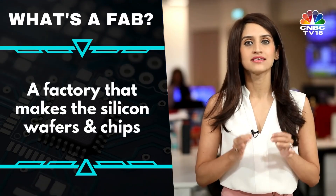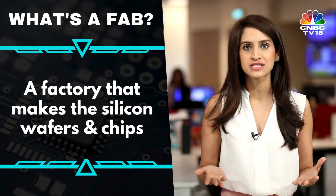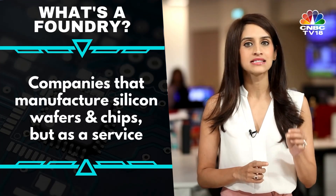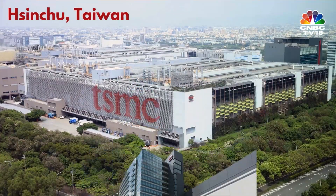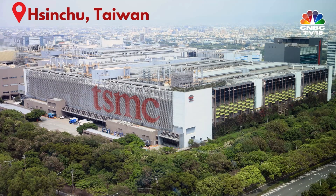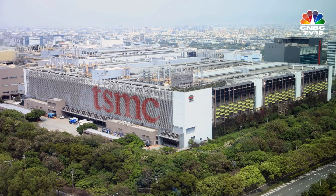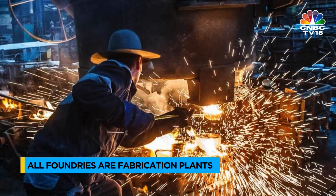The manufacturing is done by foundries or fabrication plants, and that is step two. A factory that makes the silicon wafers and chips is called a fabrication facility, or fabs for short. Foundries are also manufacturing companies but they do it as a service. The difference between a fabrication plant and a foundry is very subtle: all foundries are fabrication plants, but if you manufacture for other people, then you are a foundry.